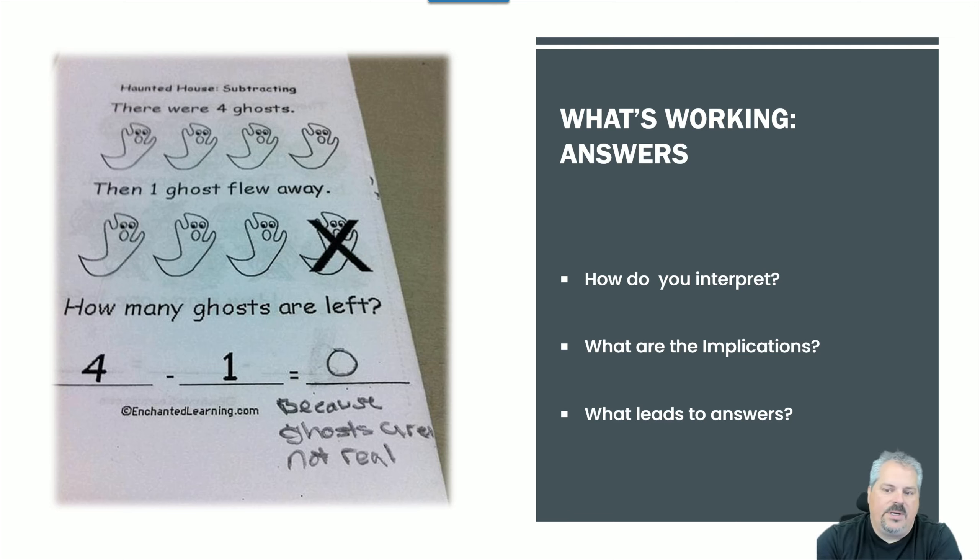What else is working? Well, answers. Take a look at the left. Haunted house subtracting. There were four ghosts, then one ghost flew away. How many ghosts are left? Four minus one equals zero. It's zero because ghosts are not real.